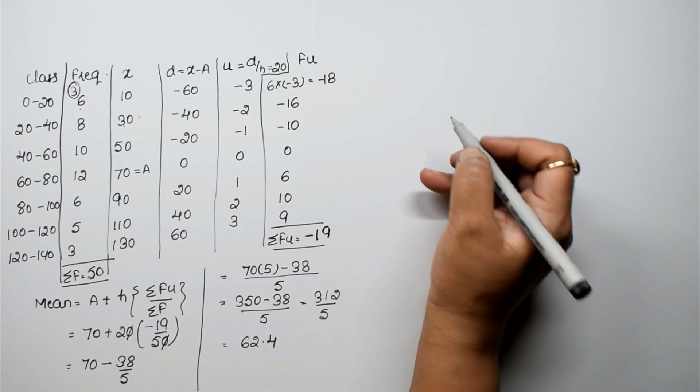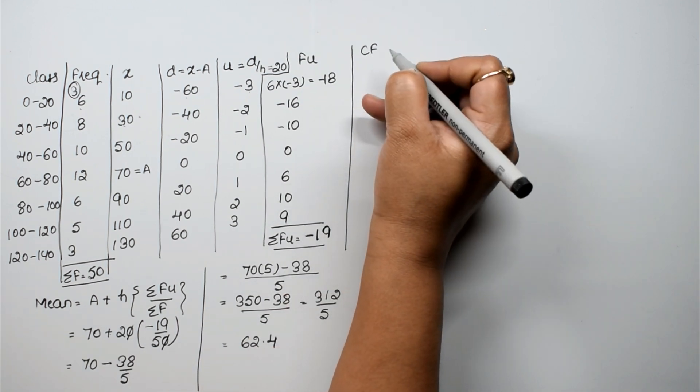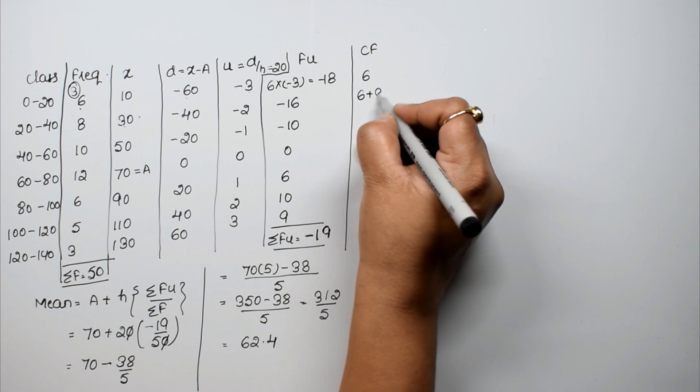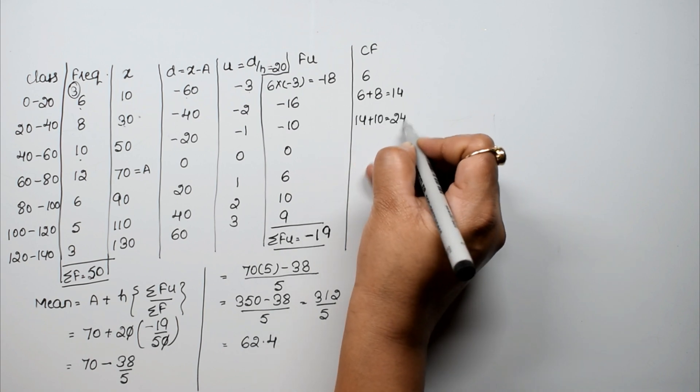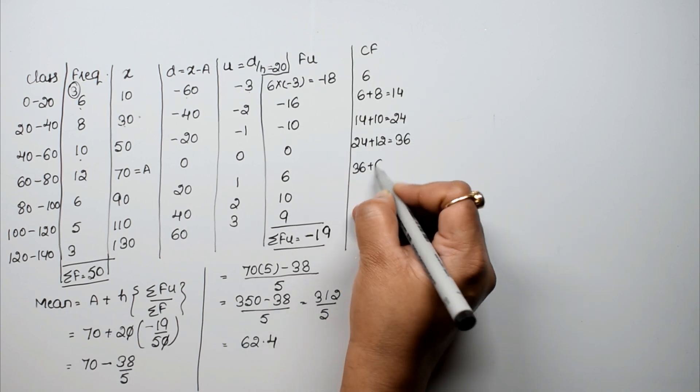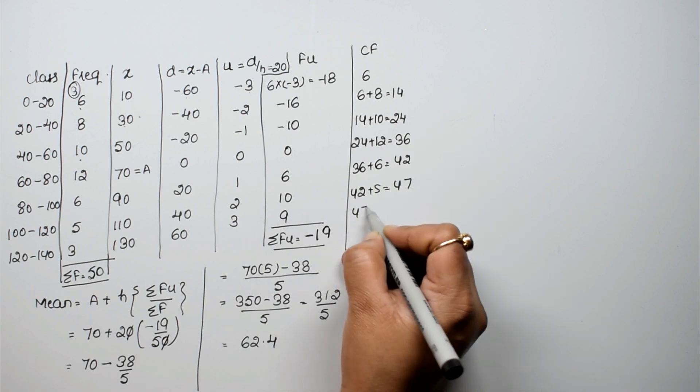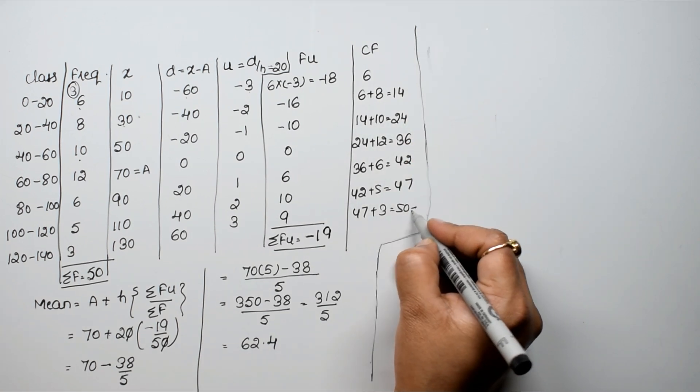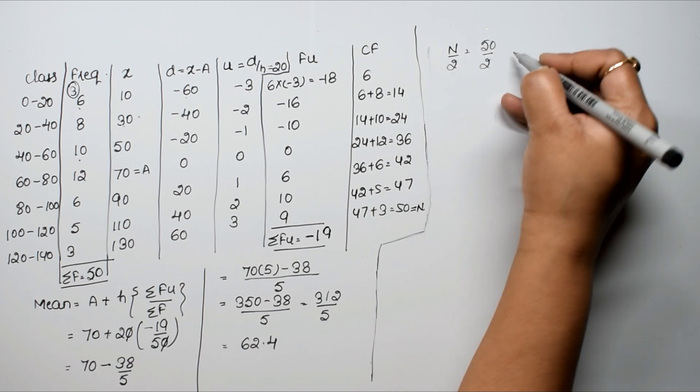Ab hume kya nikalna hai? Median nikalna hai. Mean aur median nikalne ki karjye ka zaat ta, cumulative frequency chahiye hoti hai. To pehli frequency as it is, baad mein add karti hai. 6 plus 8 equals 14. 14 plus 10 equals 24. 24 plus 12, that is 36. 36 plus 6 is 42. 42 plus 5 is 47. And 47 plus 3 equals to 50. Ye n hai. Toh n by 2 kitna ho gya? 50 divided by 2, that is 25.